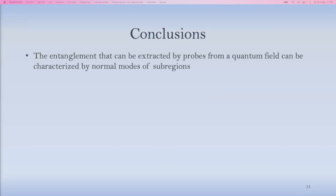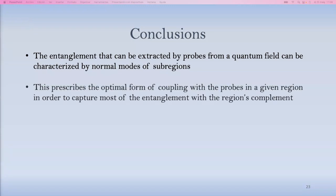So this is pretty much what I have to say for now. The conclusions are that entanglement can be very usefully characterized in quantum fields, at least in Gaussian states, by normal modes of subregions. And that the prescription that we found gives us the optimal form of coupling that the probes in a given region must implement in order to capture most of the entanglement with the region's complements as faithfully as you possibly can.